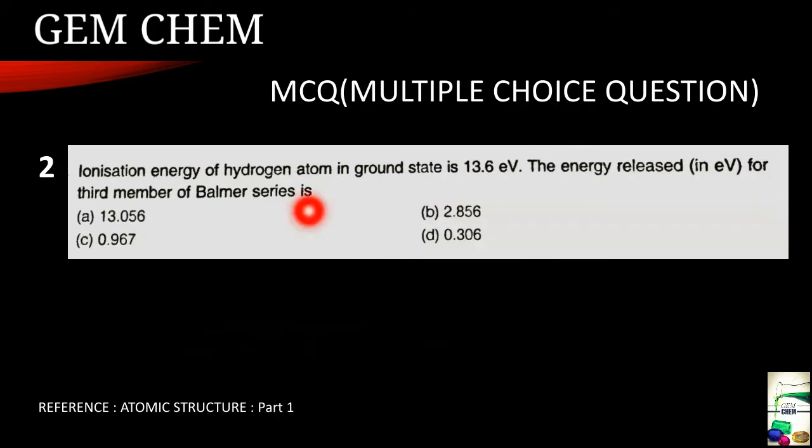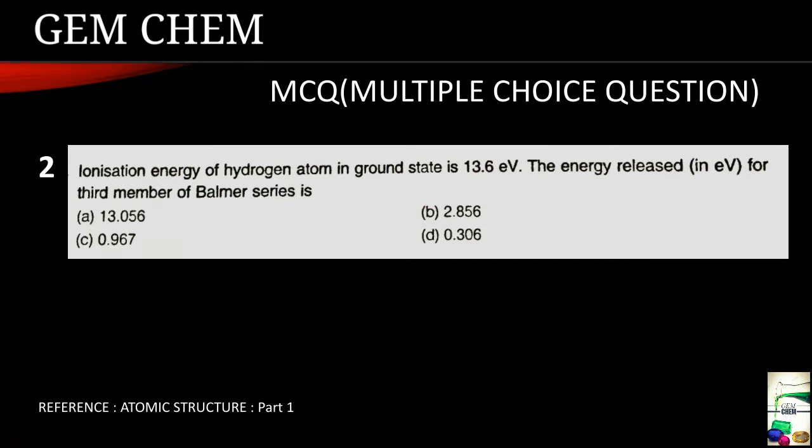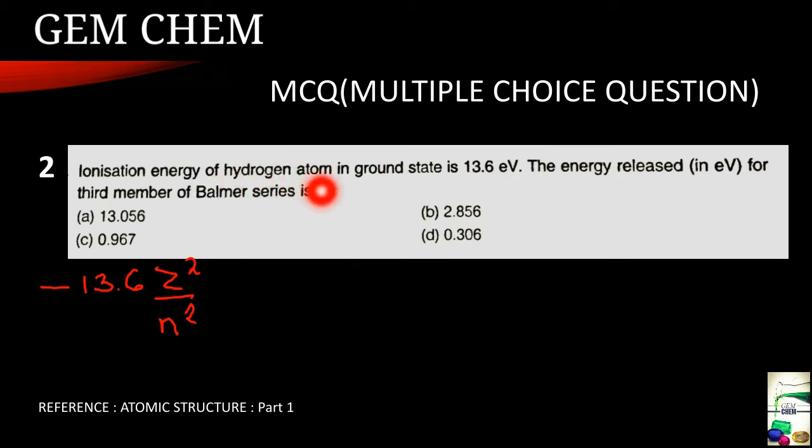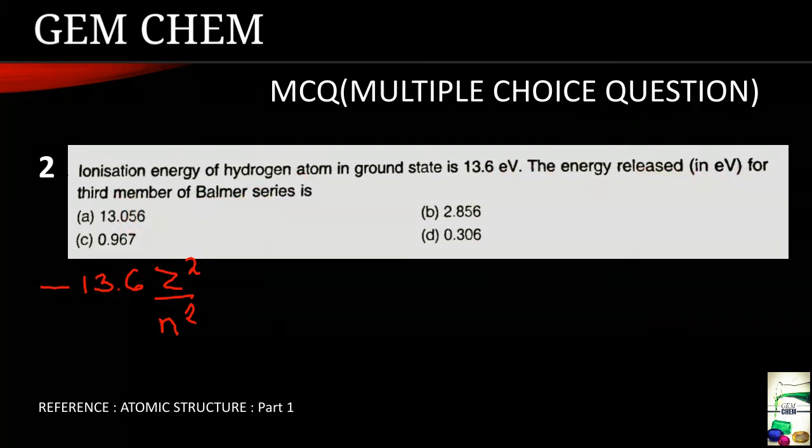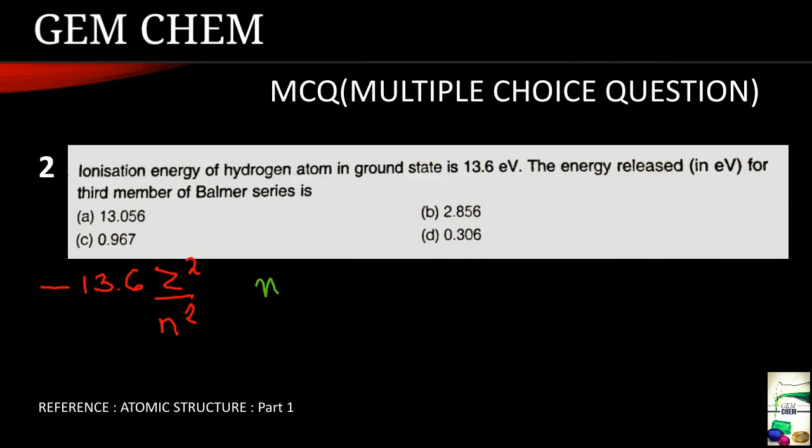Now let us see the next MCQ, this is multiple choice question and this topic is being greatly discussed in atomic structure part 1 video. We know that the ionization energy is given by the basic formula which is minus 13.6 Z square by N square. Here it is asked that ionization energy of hydrogen atom in ground state is 13.6 so the energy released in electron volt for the third member of the Balmer series. We know that Balmer series starts from N equal to 2 and the third member of the Balmer series indicates the position 5.